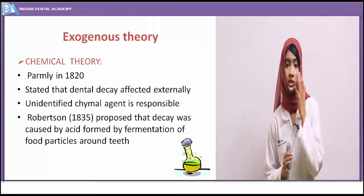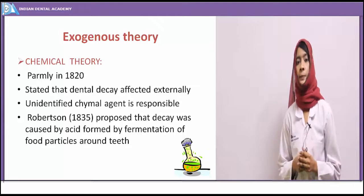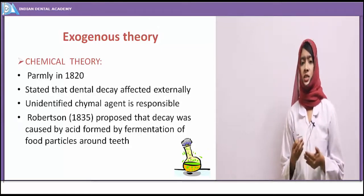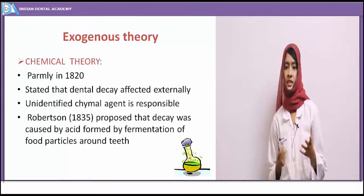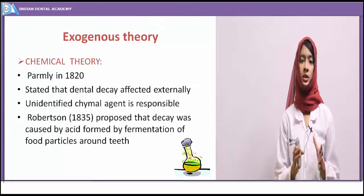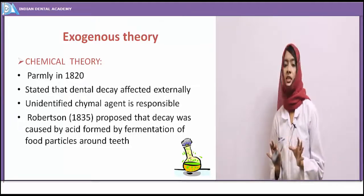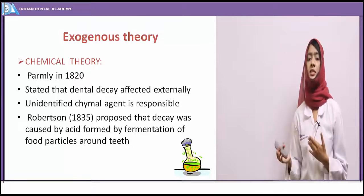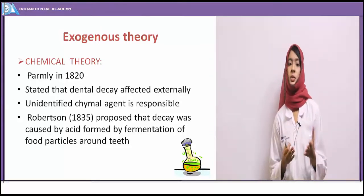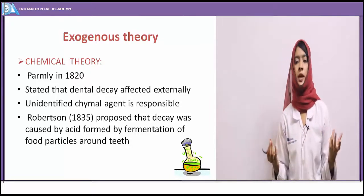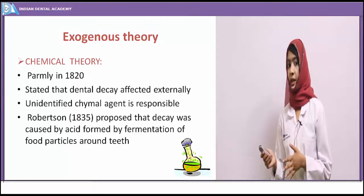Now the exogenous theories. The chemical theory was proposed by Palmley in 1820. According to this theory, an unidentified chemical agent was responsible for causing the disease. Palmley stated that dental caries affects only externally — only the surface of the tooth, with no internal action. This theory was further supported by Robertson, who showed that acid is produced by fermentation of food particles stuck to the outer surface of the teeth.